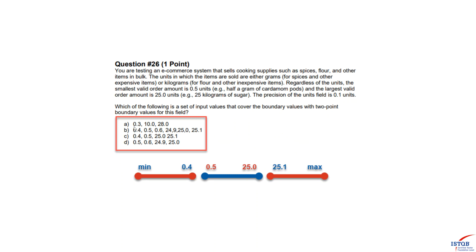Because of this, we can define only four boundary values: 0.4, 0.5, 25.0, and 25.1. Checking the answers: A is not correct — 0.3, 10.0, and 28.0 don't include any of those four boundary values. B is not correct — two additional values are included, 0.6 and 24.9, which are associated with three-value boundary analysis. C is correct — 0.4, 0.5, 25.0, and 25.1 are all included. D is not correct.